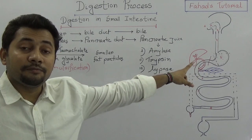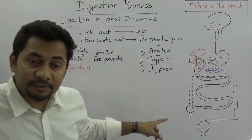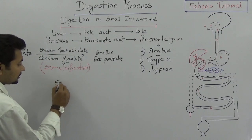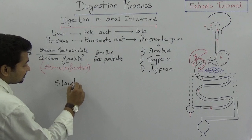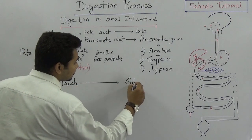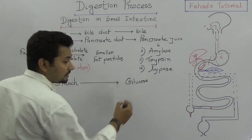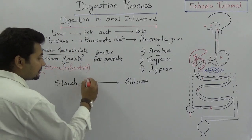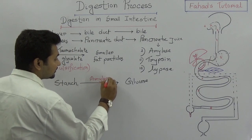Emulsification is important because the lipase enzyme will have more surface area to work on — smaller fat particles are easier to break down. Meanwhile, the starch coming in with the food will be broken down into glucose.